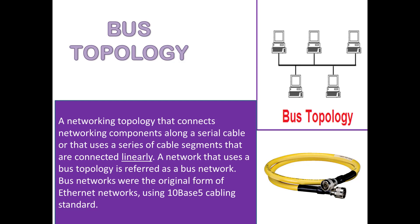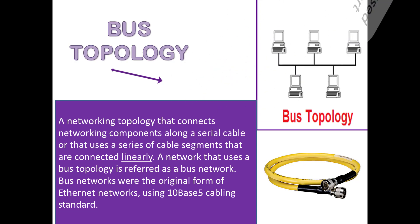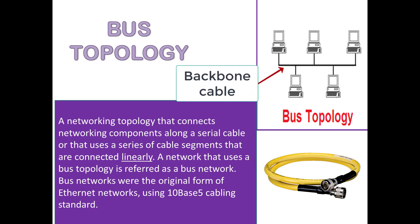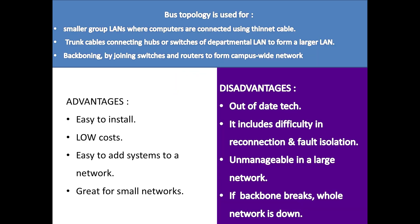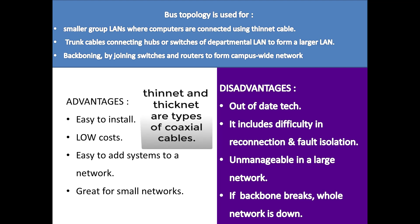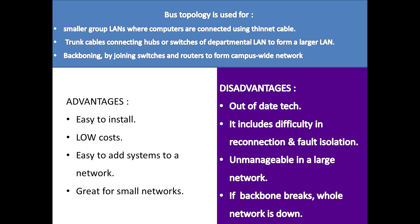A network using Bus Topology is called a Bus Network. Bus Networks were the original form of Ethernet networks using 10Base 5 cabling standards. The yellow cable is 10Base 5 and it was used for Ethernet connections. The serial cable connecting all the devices is called the backbone cable. Bus Topology is used for smaller LANs where computers are connected using Thinnet cables. There are 2 types of cables: Thinnet and Thicknet.